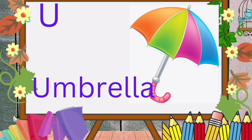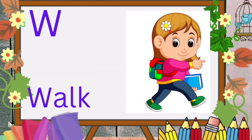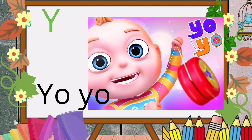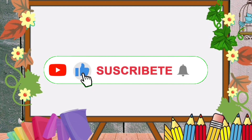V for van. W for walk. X for xmas. Y for yoyo. Z for zero. Please like, subscribe for more videos. Thanks for watching.